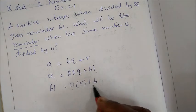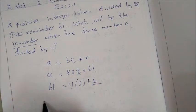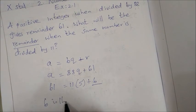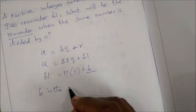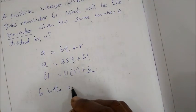The same number divided by 11... So 6 is the remainder. When divided by 11, same number by 11, 6 is the remainder.